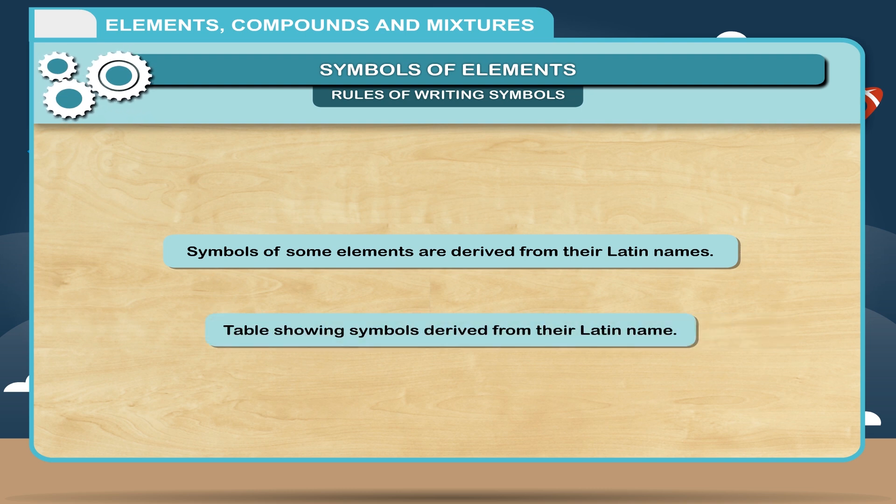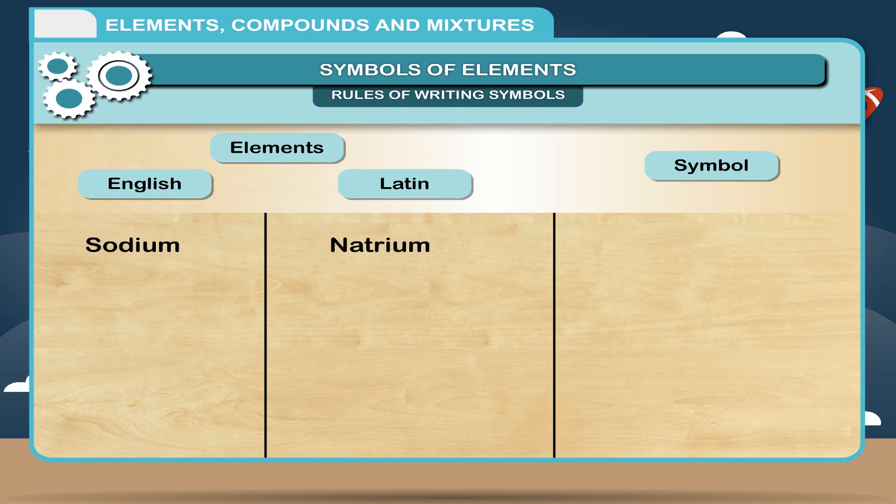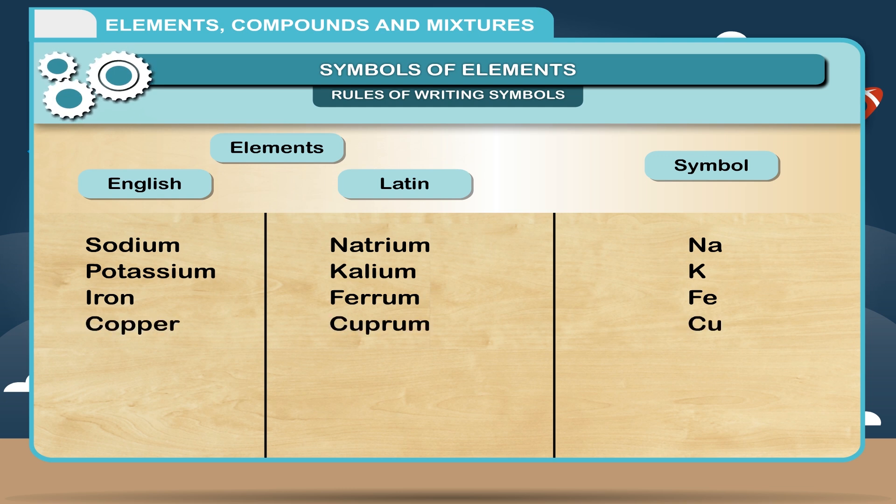Table showing symbols derived from their Latin name. Elements, symbols, English, Latin: Sodium, Natrium Na; Potassium, Kalium K; Iron, Ferrum Fe; Copper, Cuprum Cu; Silver, Argentum Ag.